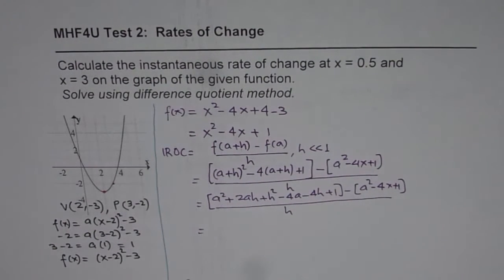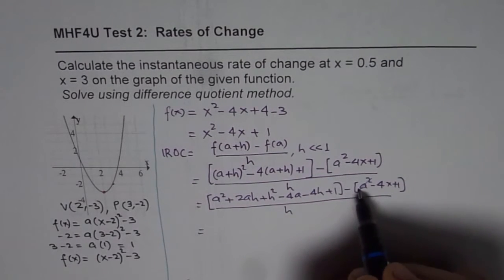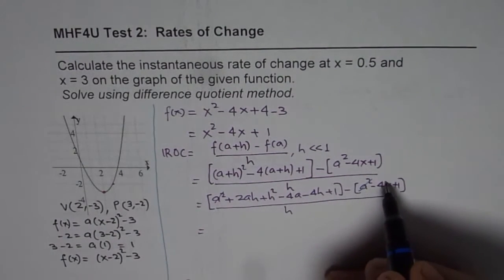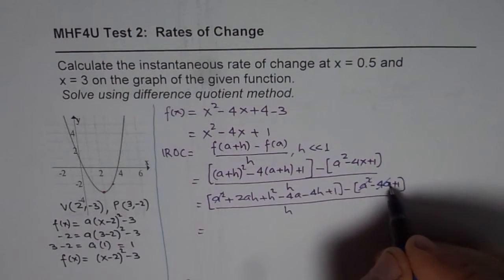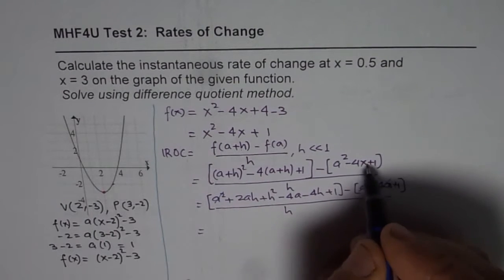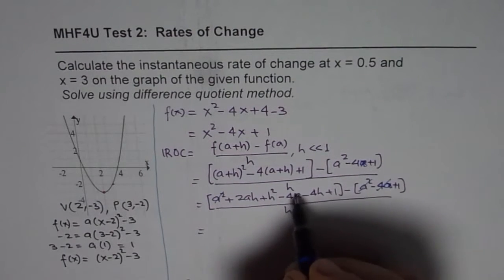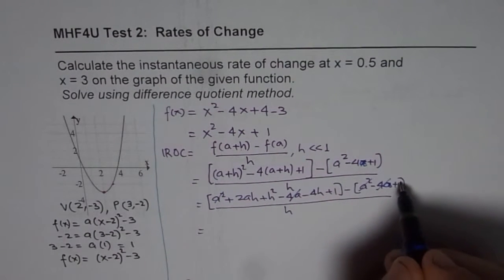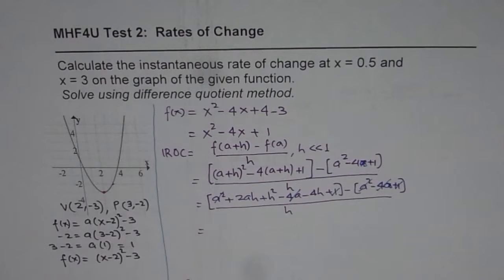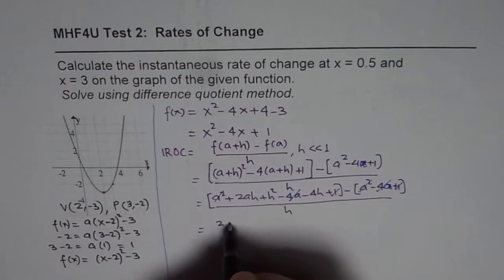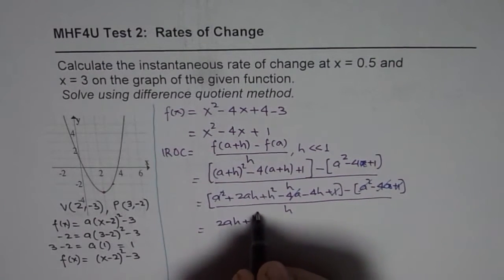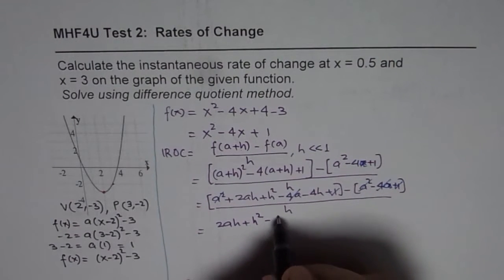You can see that several terms cancel: a² minus a² is 0, minus 4a minus 4a cancels to 0, and plus 1 minus 1 is 0. So solving, we are left with 2ah plus h² minus 4h, all divided by h.